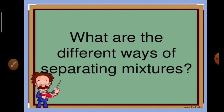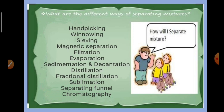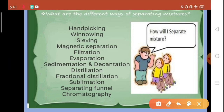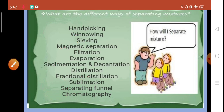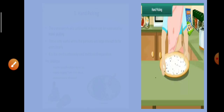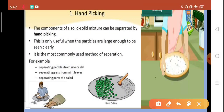Now, what are the different ways of separating mixtures? There are many methods, and we are going to cover: handpicking, winnowing, sieving, magnetic separation, filtration, evaporation, sedimentation and decantation, distillation, fractional distillation, sublimation, separating funnel, and chromatography. Let's check them out one by one.